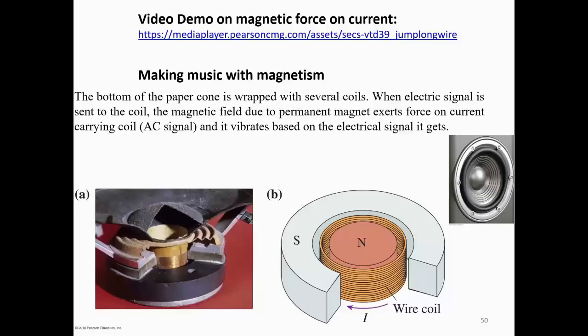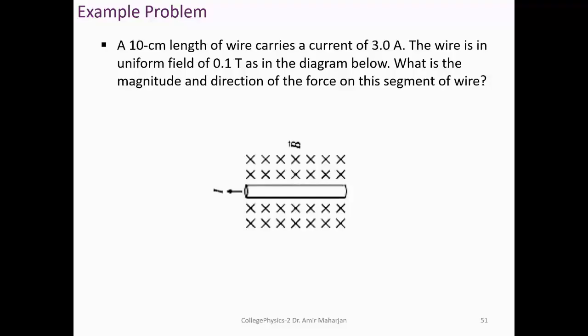A speaker cone vibrates because of the magnetic force on the coil. When you apply an audio signal, it generates an oscillating current, which generates an oscillating force on the coil. The coil vibrates based on the signal and you can hear the music.